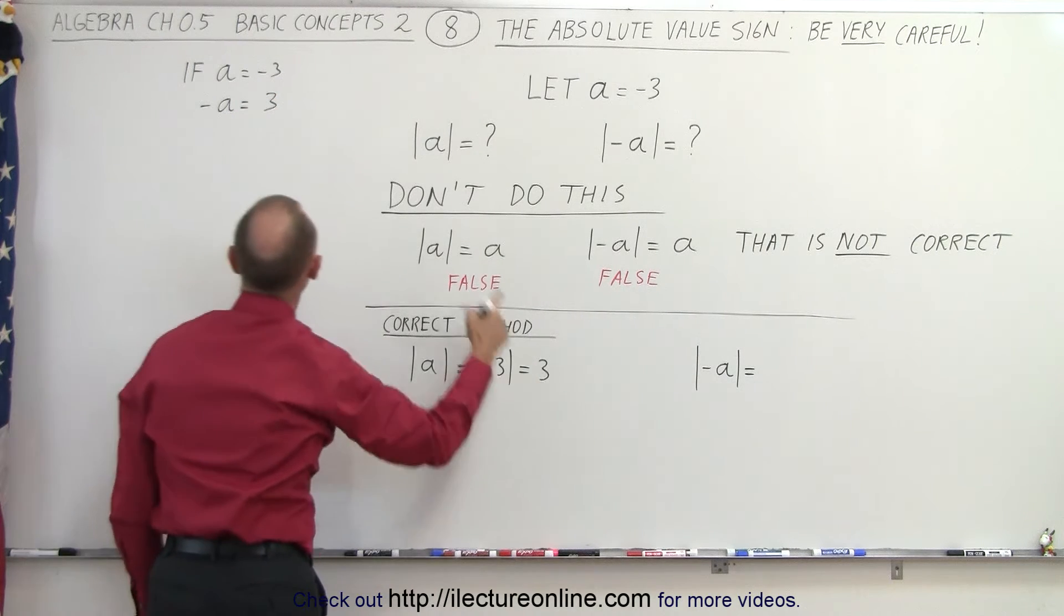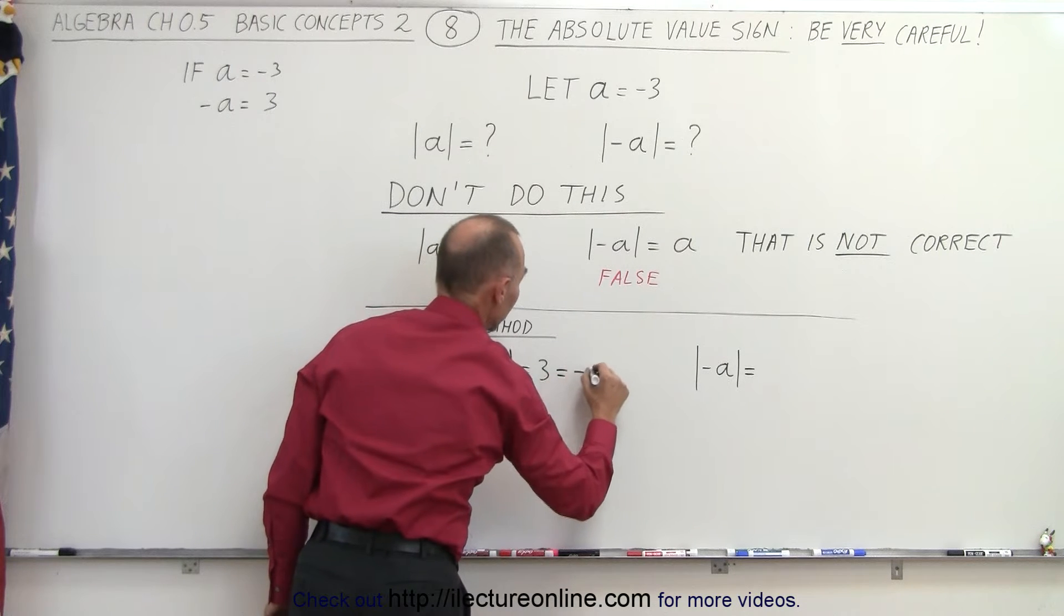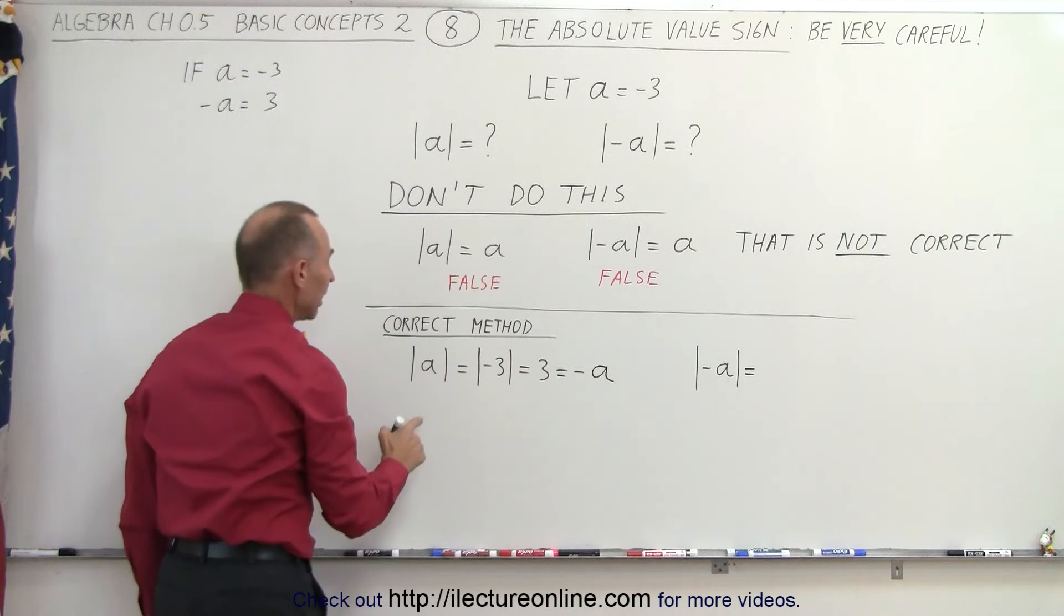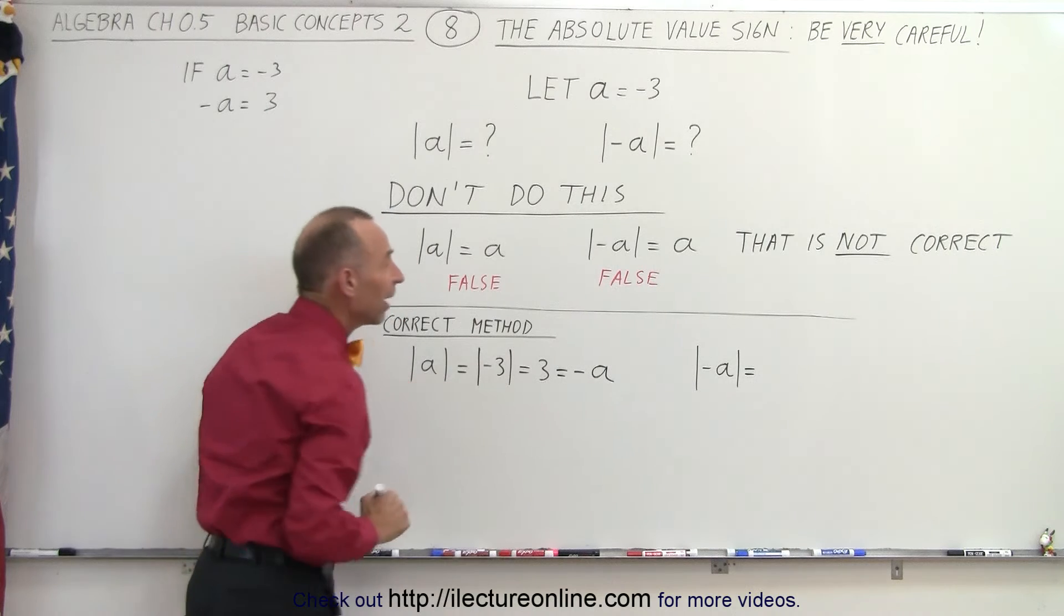So if positive 3 equals negative a, then this is equal to negative a. So you can see that the absolute value of a is actually negative a.